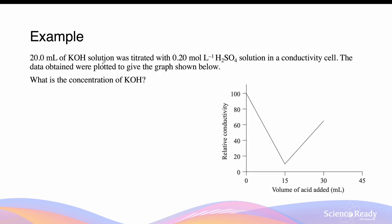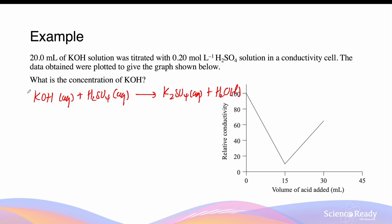20 millilitres of potassium hydroxide solution was titrated with 0.2 mol/L of sulfuric acid in a conductivity cell. The data were plotted to give the graph shown. The reaction between potassium hydroxide and sulfuric acid forms potassium sulfate and water. The ratio is 2 KOH to 1 H₂SO₄, producing 2 molecules of water. This is a strong base and strong acid titration, producing a sharp turning point on the graph indicating the equivalence point.